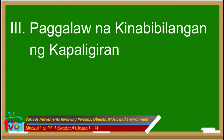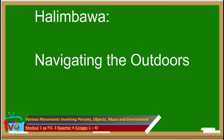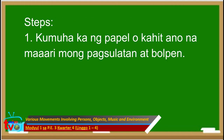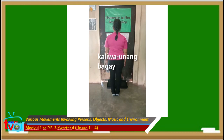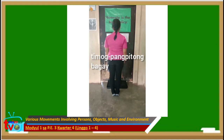Ikatlong paggalaw ay paggalaw na kinabibilangan ng kapaligiran na maaaring indoor o outdoor. Halimbawa sa paggalaw na ito ay ang navigating the outdoors. Pero ngayong pandemya, palitan ang outdoors ng indoors. Ang mga kagamitan sa navigating outdoors ay papel at ballpen o lapis. Steps sa laro: Una, kumuha ng papel at ballpen. Ikalawa, harapin mo ang inyong pintuan — ituturing mo na iyan ang hilaga. Ikatlo, manatili kang nakaharap sa pintuan at sa iyong kaliwa, isulat mo ang unang bagay na malapit sa iyo. Ikaapat, sa iyong kanan, isulat mo ang pangatlong bagay na malapit sa iyo. Ikalima, ano naman ang pangpitong bagay na nasa iyong timog?